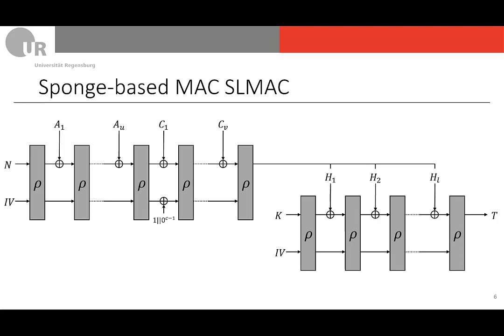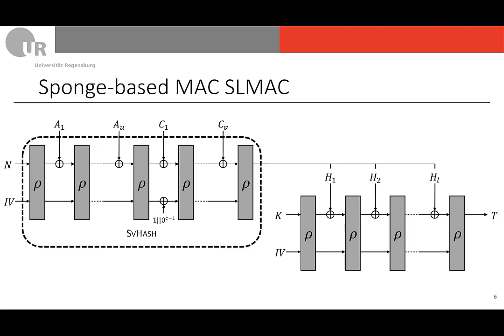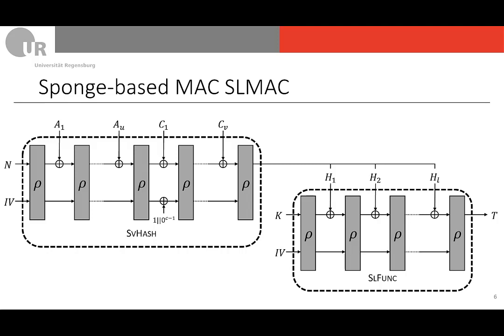Similarly for the message authentication code SL-MAC: in the first part we set up the initial state with nonce N and some IV, then absorb the associated data R bits at a time from A1 up to AU, followed by absorbing the ciphertext C1 to Cv. To demarcate the swap from associated data to ciphertext, there is an extra bit flip in the lower part when the first ciphertext block is absorbed. This part corresponds to the sponge-based vector hash function SVHash. Its output is then input into SLFUNC again — setting up the initial state with the key and some IV — and the final output is the tag T.